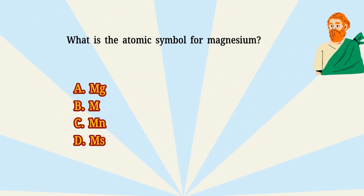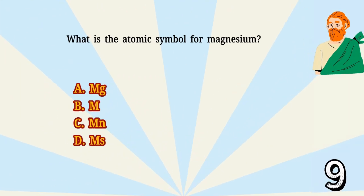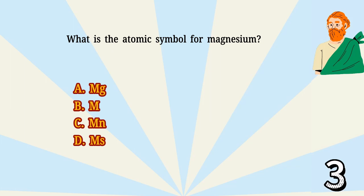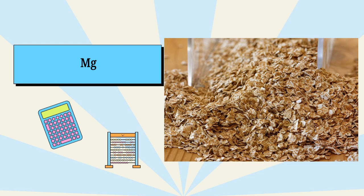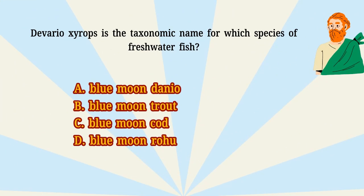What is the atomic symbol for magnesium? Deverio xyrops is the taxonomic name for which species of freshwater fish?